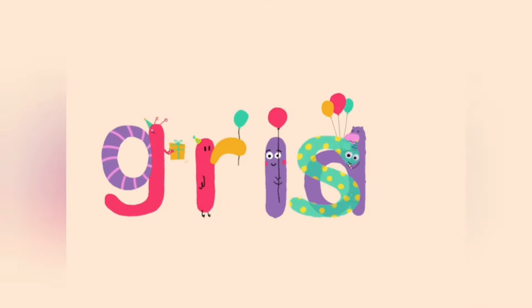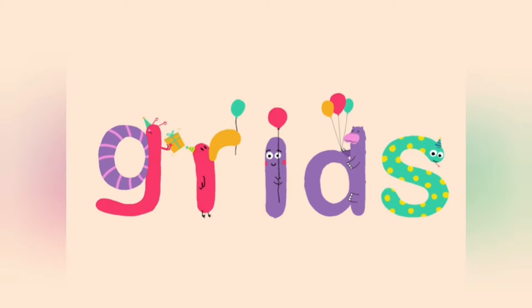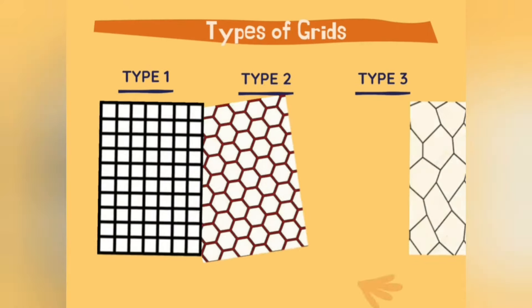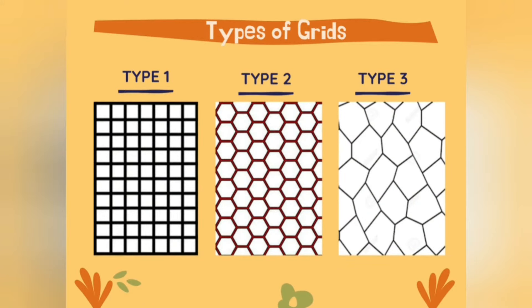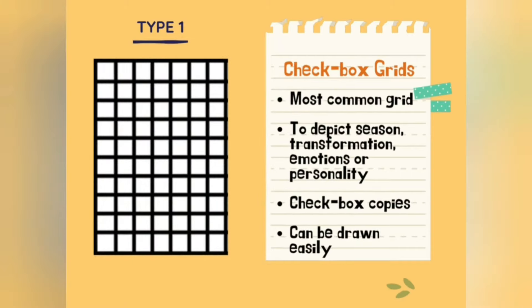What are these grids and how many types do we have? Do they have different functions? Let's answer all of these questions one by one. Generally, we have three major types of grids, and we'll be covering all three types in detail. Our first type is checkbox grids — these are the most common grids and are generally used to depict season transformation, emotions, or personality. These grids are perfect for practicing.